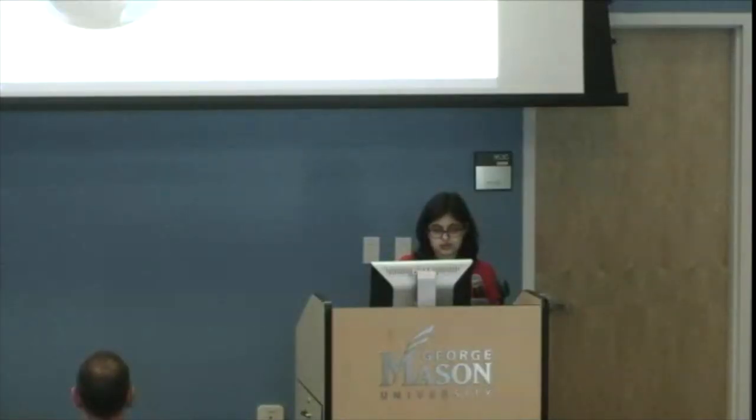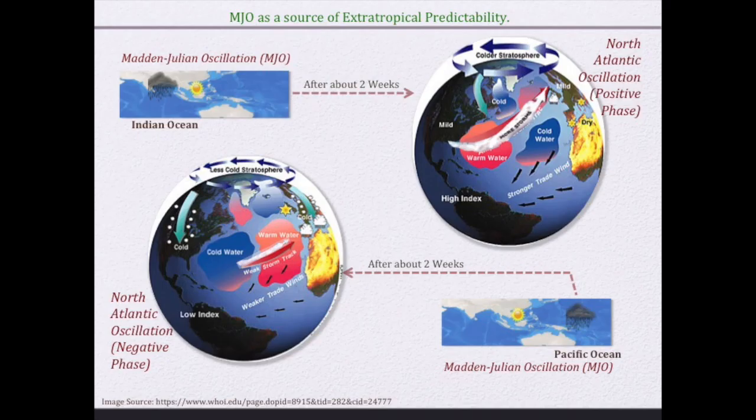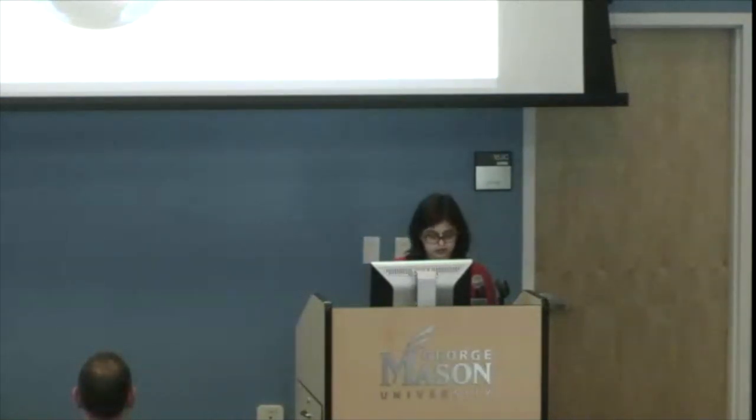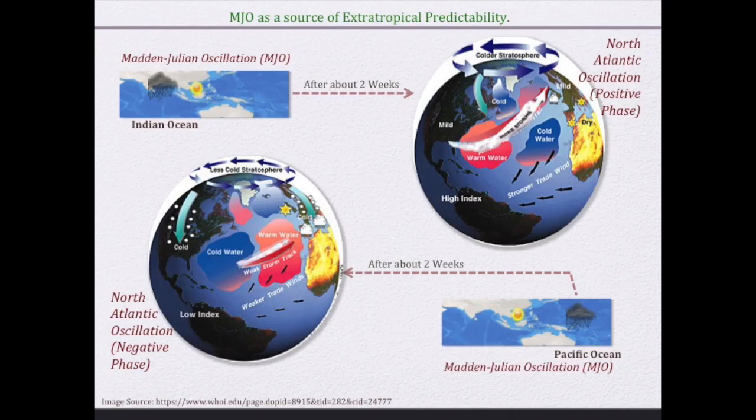When the Madden-Julian Oscillation is over the Indian Ocean region — if you look at the top panel — in about two weeks' time, a strong pressure gradient develops over the Icelandic Low and Azores High, as a result of which more storms can cross the Atlantic. Because of this, Northeast United States and Northern Europe experience mild and wet winters, whereas the Mediterranean region, Southern Europe, and Canada receive cold winters.